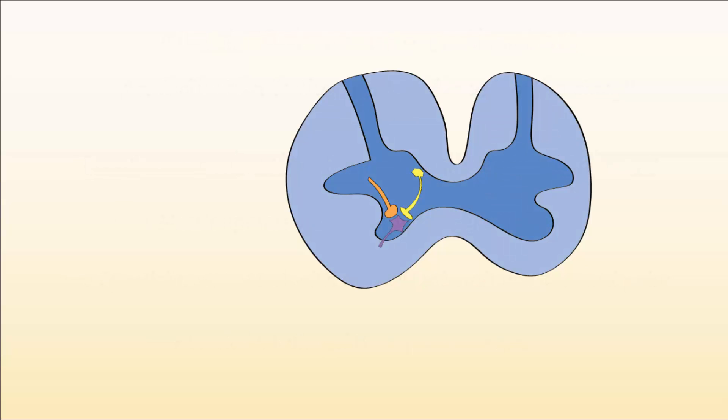To understand the mechanisms for the muscle relaxers diazepam, tizanidine, and baclofen, let's review a cross section of the spinal cord and zoom in on the motor neuron synapses.